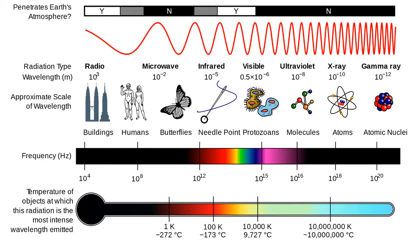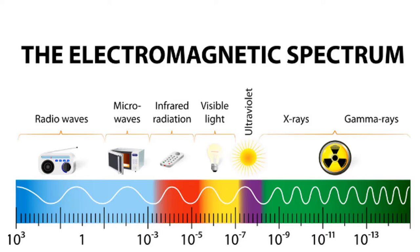Light with a longer wavelength, like radio waves, has less energy, while light with a shorter wavelength, like gamma rays, has more energy. When I say longer wavelength, I mean the bumps are farther apart, and when I say shorter wavelength, I mean the bumps are closer together.